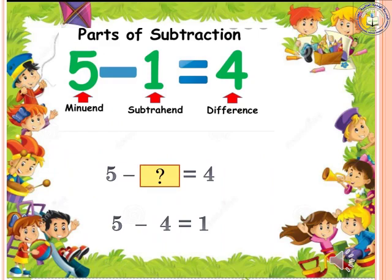In subtraction: the first number is called the minuend, the second number is called the subtrahend, and the answer is the difference. For example, 5 minus 1 equals 4. Now if the second number is missing — 5 minus dash equals 4 — we can use subtraction: 5 minus 4 is 1. So the missing subtrahend is 1.